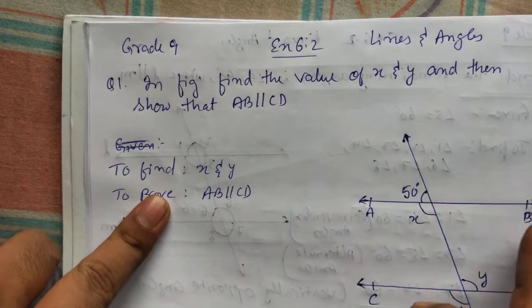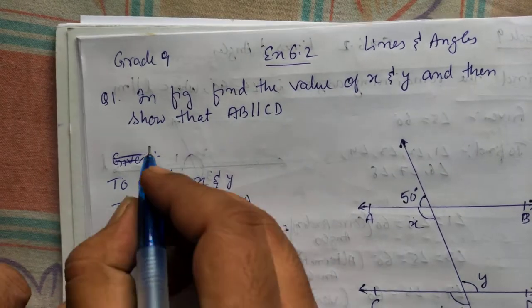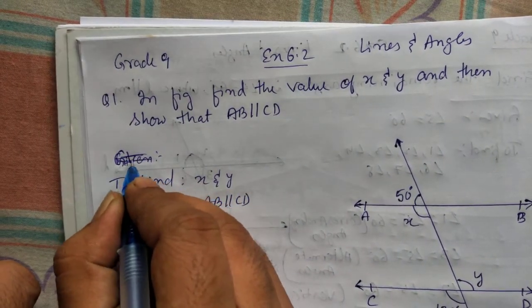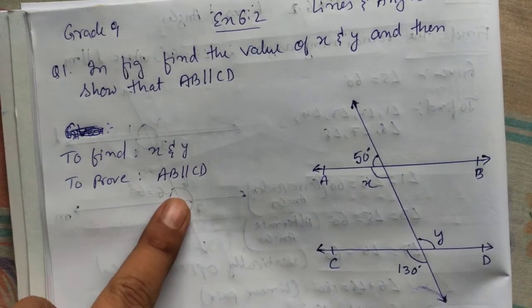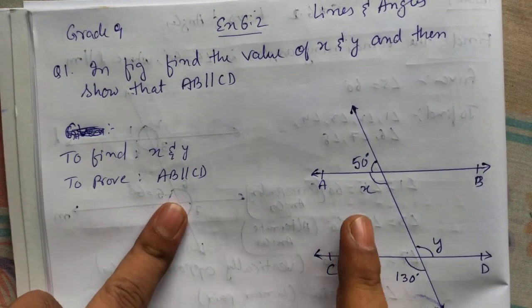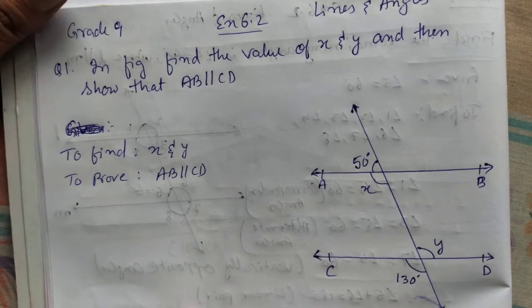In this question, they have given these two lines are parallel. You can write given or we are going to show that it's parallel. It's not given, we have to show that it's parallel. You have to find x and y and after that we are going to show it's parallel.